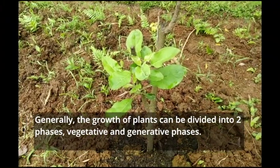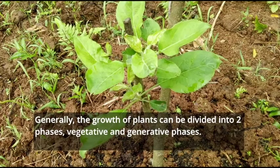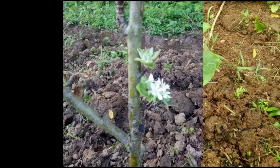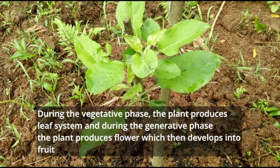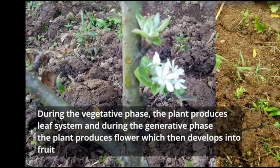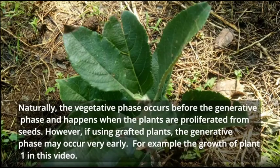Generally, the growth of a plant can be divided into two phases: vegetative and generative. During the vegetative phase the plant produces a leaf system, and during the generative phase the plant produces flowers which then develop into fruit. Naturally, the vegetative phase occurs before the generative phase, and this happens when the plants are proliferated from seeds.